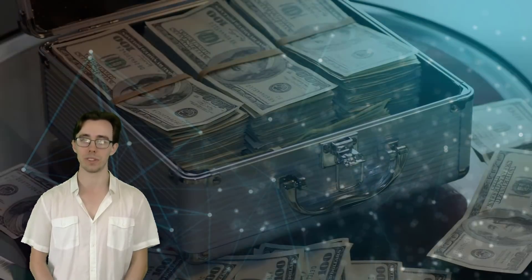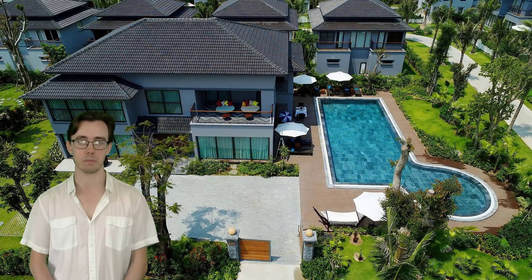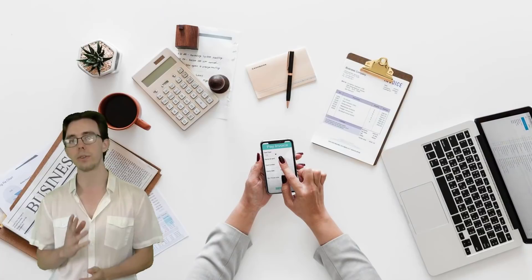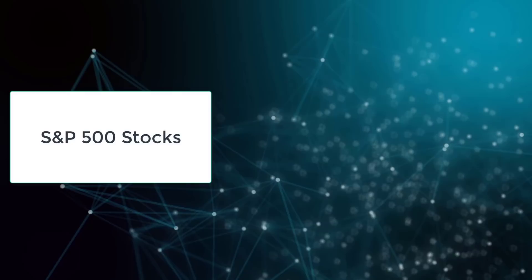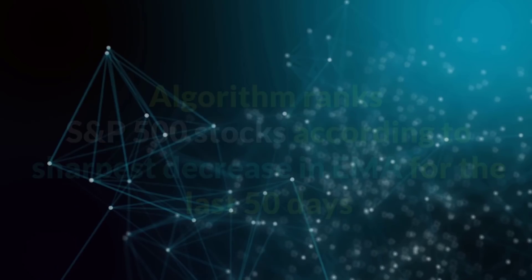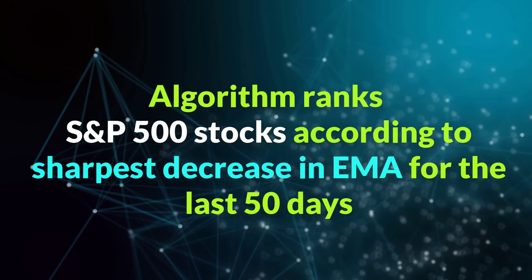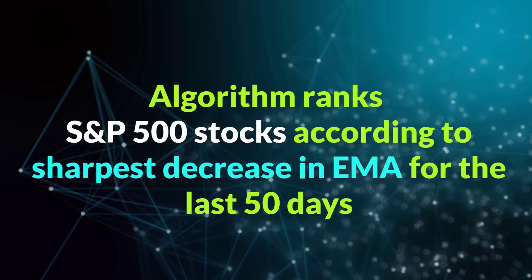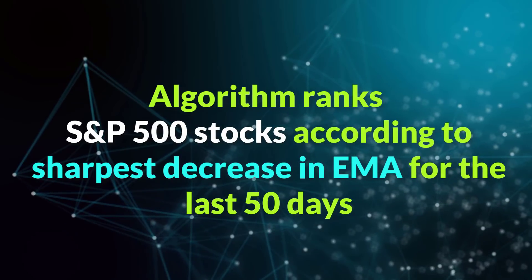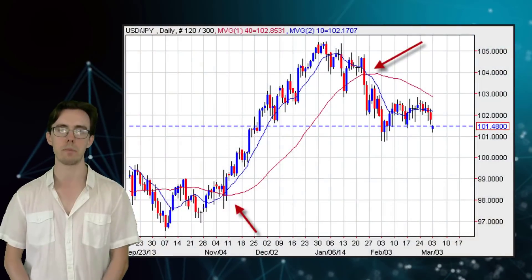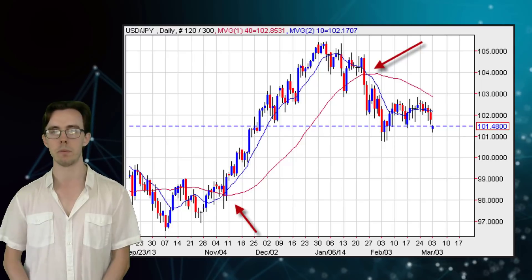Before we go into the details of the script, let's talk about what this script will and won't do. First of all, this script will not make you a million dollars overnight, and it also won't allow you to quit your job anytime soon. But what it might do is show you a simple framework that you can use and expand on so that one day maybe you can make a solid profit from it. And just in case it needs to be said, I am not by any means a financial advisor. The script scans through a list of S&P 500 stocks and finds those that are most oversold — it ranks all S&P 500 stocks according to those with the sharpest decrease in exponential moving average, or EMA, for the last 50 days.